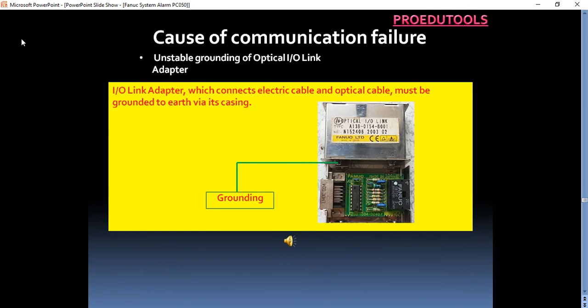Unstable grounding of optical IO link adapter. IO link adapter, which connects electric cable and optical cable, must be grounded to earth via its casing.